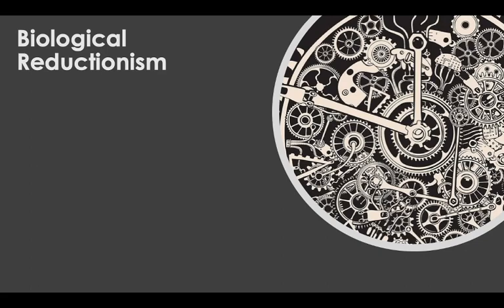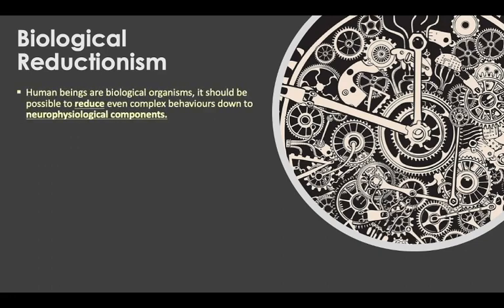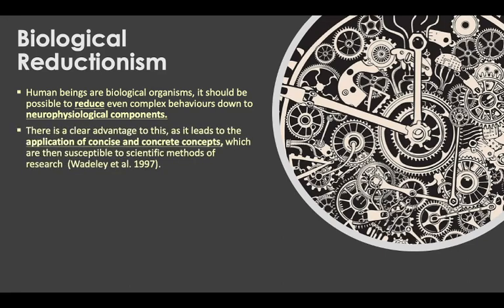So, biological reductionism. I've got a picture of a clock with gears. Biological reductionism is based on the premise that human beings are biological organisms made up of physiological structures and processes. All behavior is at some level biological and can be explained through neurochemical, neuropsychological, evolutionary, and genetic influences — so it should be possible to reduce behavior down to those neurophysiological components. An advantage is that it leads to concise and concrete concepts susceptible to scientific methods of research, making it more scientific.